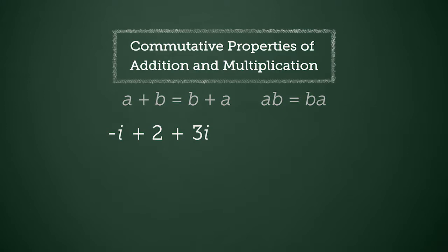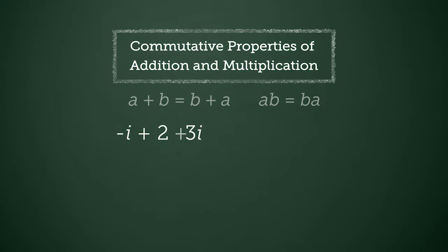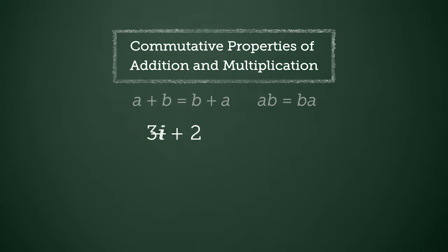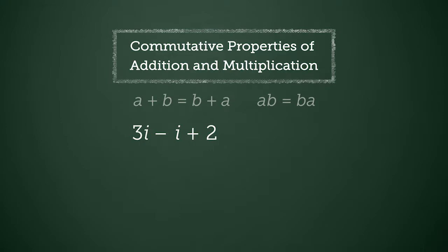This addition example has three terms that can be rearranged. The commutative property of addition allows us to change the order of the addends, which could be used to form the expression 3i minus i plus 2. 3i minus i is 2i, meaning that in the simplest form, this expression is 2i plus 2.